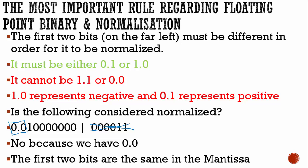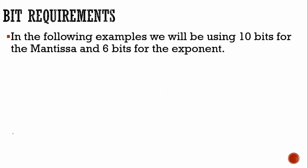Before we do our examples, we have to decide how many bits we're going to have in our mantissa and how many bits for our exponent. Usually they're going to tell you. Sometimes they'll say you have two bytes of data — split it between the mantissa and exponent the way you want. Because this is Cambridge, they normally give you a certain amount of bits for each. Normally they will give you 10 bits for the mantissa and six bits for the exponent, and we're going to be using that format.